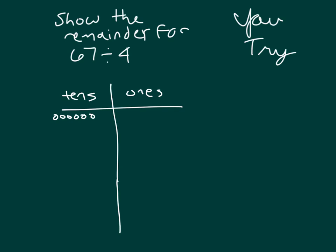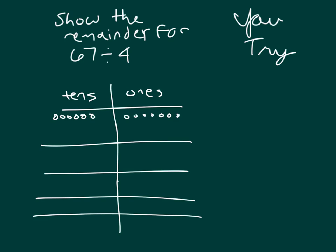Alright, first, let's model 67 as 6 tens and 7 ones. Next, we'll go ahead and draw our groups. In this case, we're drawing 4 groups because we are dividing by 4. We'll start in the tens place where we were able to put 1 ten into each of those groups. What we were left with and our remainder was 2, 2 tens, which we can unbundle at that point as 10 ones for each ten.